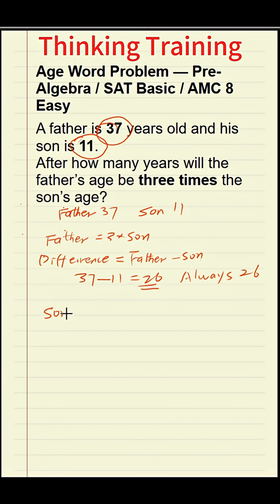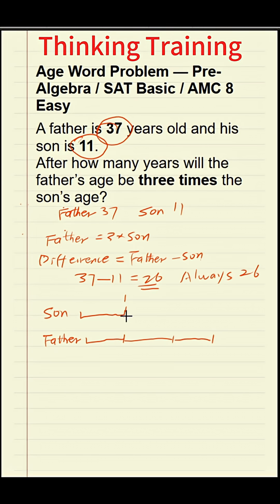Now let's draw a bar model. The son's age is one unit; the father's age being three times the son's is three units. The difference between them is always 26 years, so two units equal 26. That means one unit equals 13.